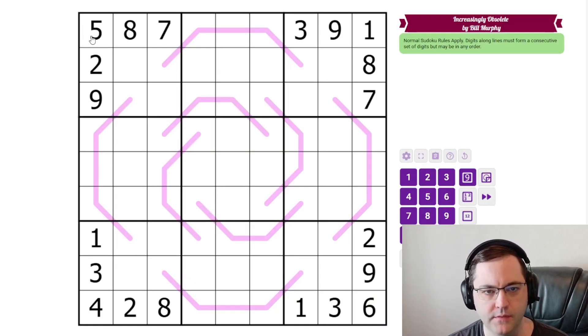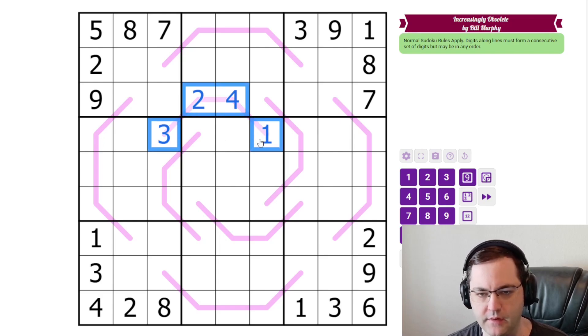This is a Renban Sudoku. We have normal Sudoku rules, one to nine in each row, column, and three by three box. Additionally, we have some lines in the grid, and along these lines we must have a set of digits that is consecutive, but they can be placed in any order. So for example, this could be one, two, three, four, but it doesn't have to be in that order. It could be like that, could be like that, etc. As long as this forms a consecutive set without repeats. So this could not be another three, for example. That's not allowed. And those are the rules.